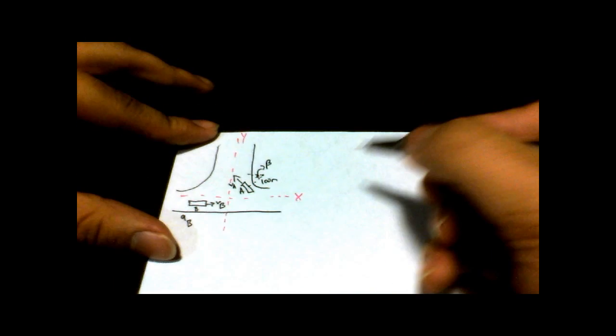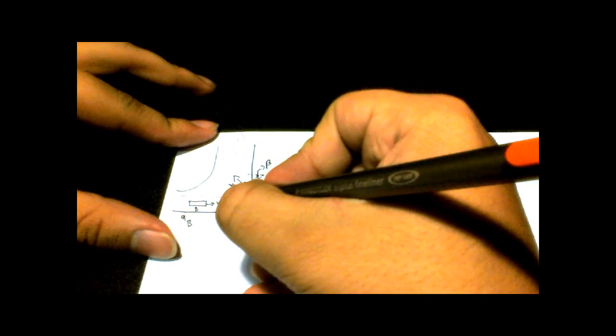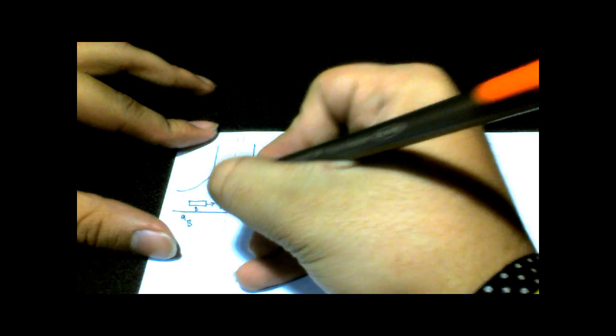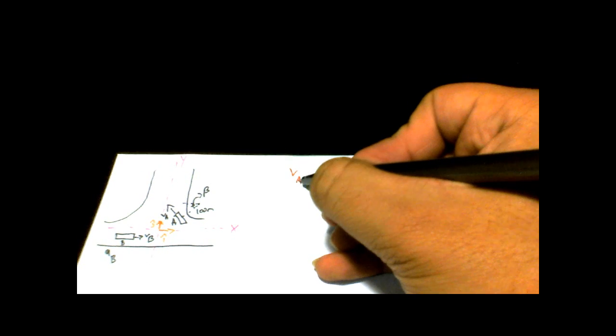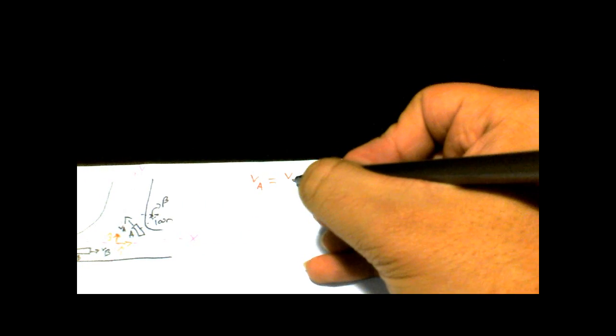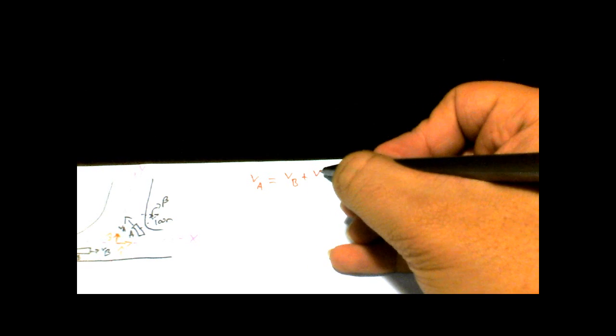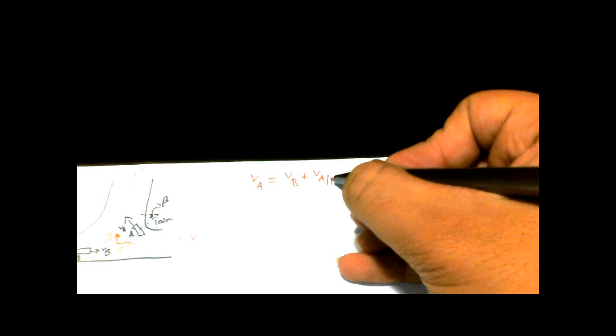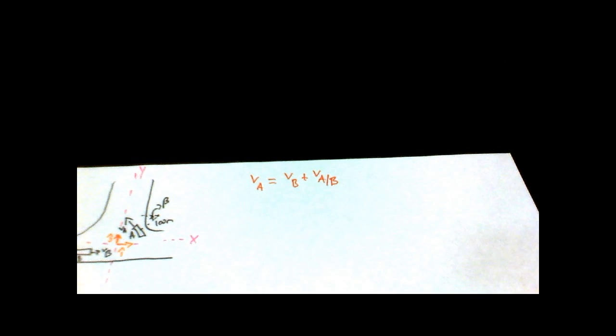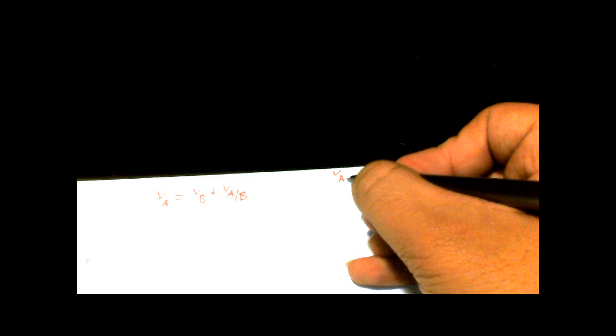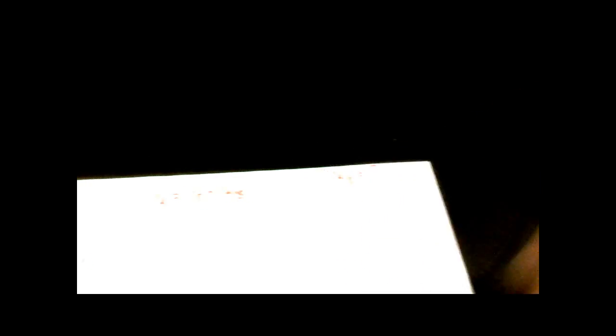Okay. So, just reminding you guys what the unit vectors are. I is here. J is there. So, those are our unit vectors. Now, the magical equation that you need to know for this is that V of A equals V of B plus V of A with respect to B. Oh yeah, right. They ask you for V of B. They say, what is V of A in respect to B? That's the question.